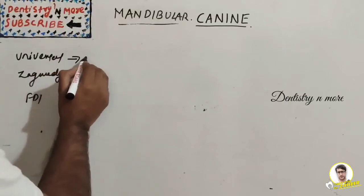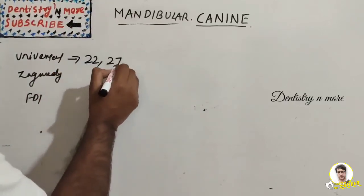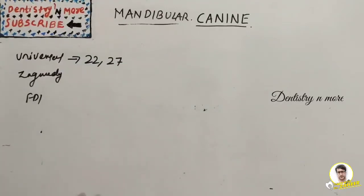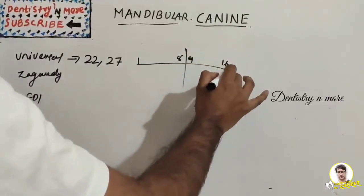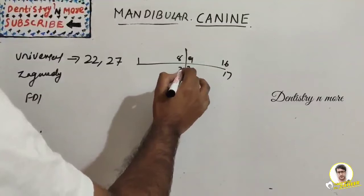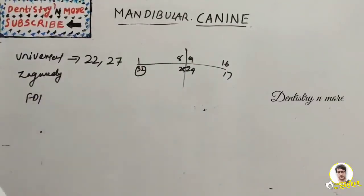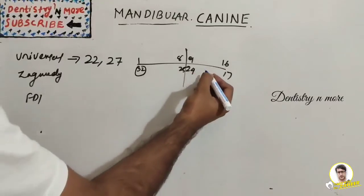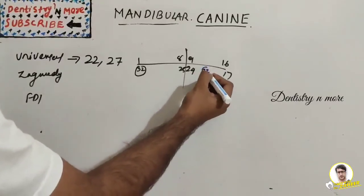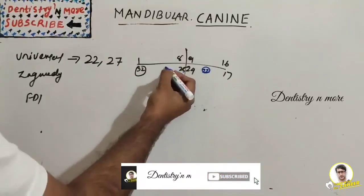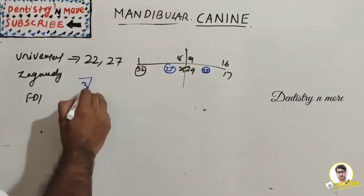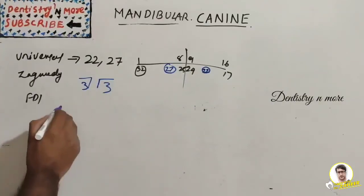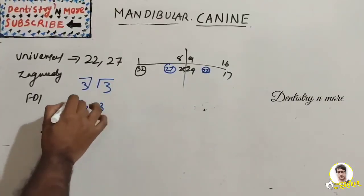In the Universal system, the numbers are 22 and 27. In the Zsigmondy-Palmer system it comes like this. The FDI system is 33 and 43 — this is the quadrant and this is the tooth number.